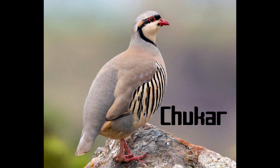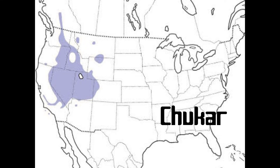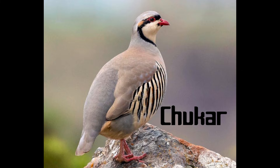Introduced from countries in the Middle East like Afghanistan and Saudi Arabia, the Chukar is a game bird that lives in the western deserts of North America. It runs and scampers up steep, barren terrain with agility and speed. This bird has dark bars on its sides and a red beak.